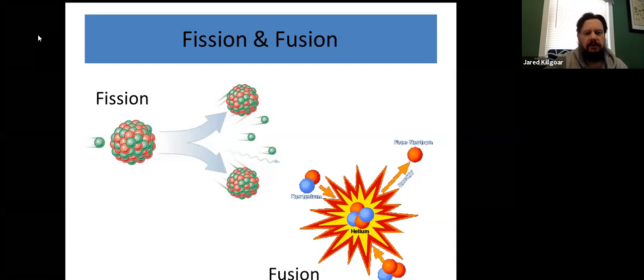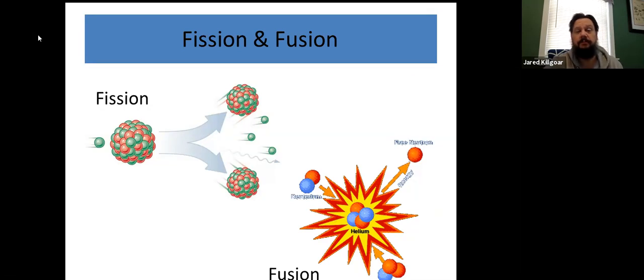These green things, those are representing neutrons. You also release considerable amounts of energy. Fusion is when you take two smaller nuclei right here and you put them together, forming a bigger nucleus.